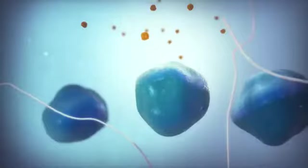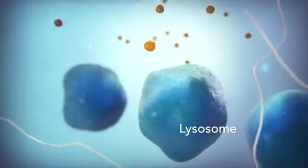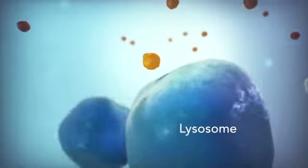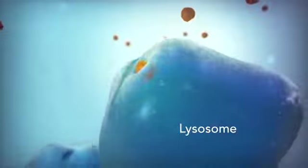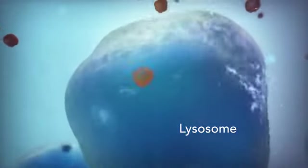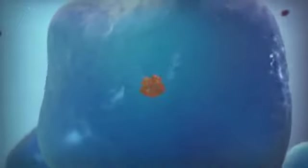Going back to the animal cell, you will see an organelle called a lysosome. Lysosomes are the garbage collectors that take in damaged or worn-out cell parts. They are filled with enzymes that break down this cellular debris.